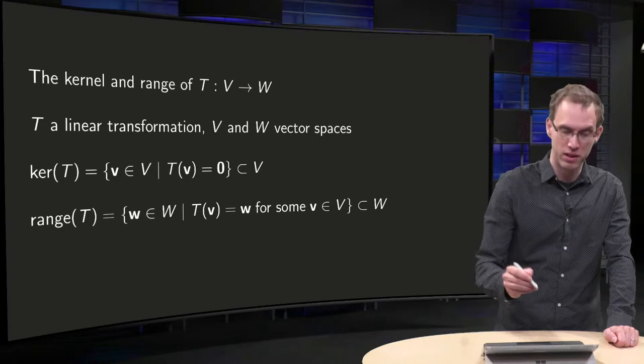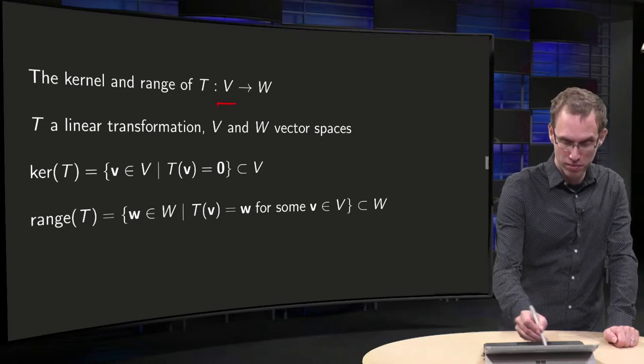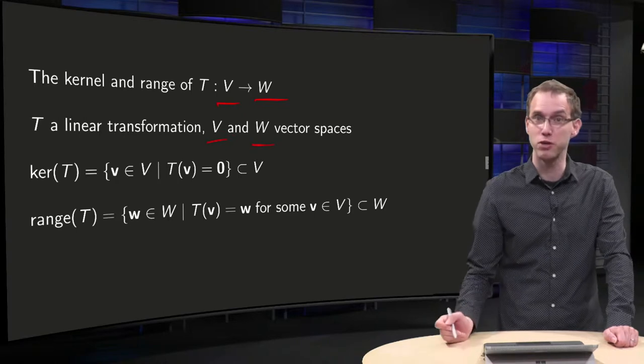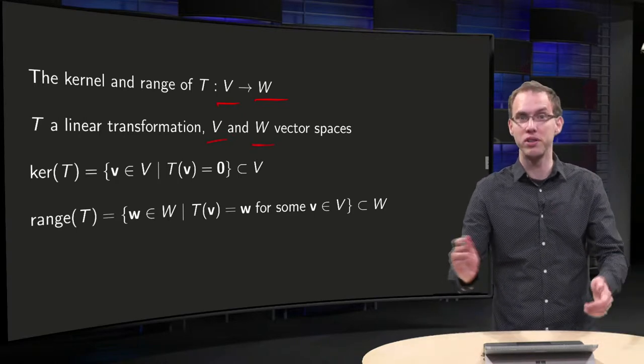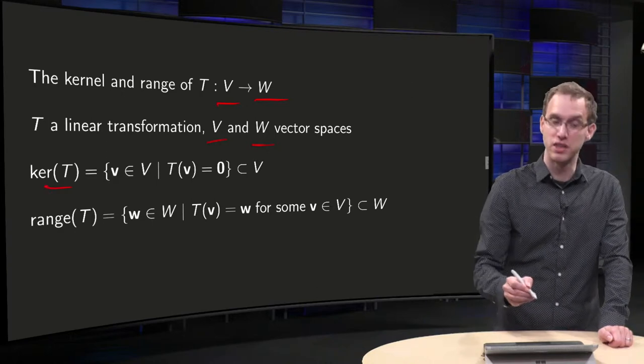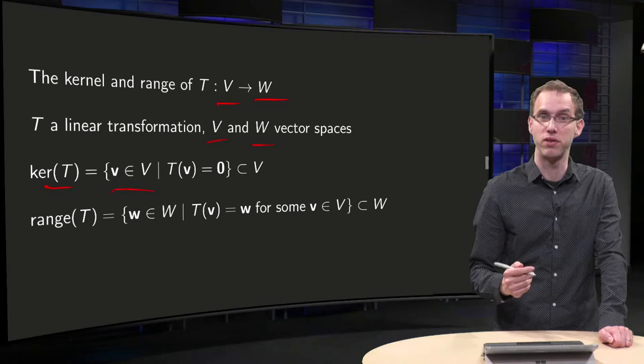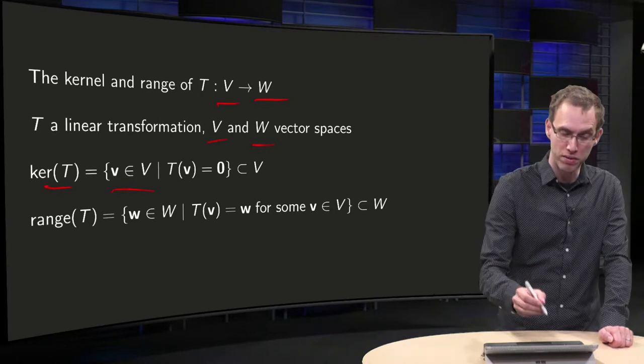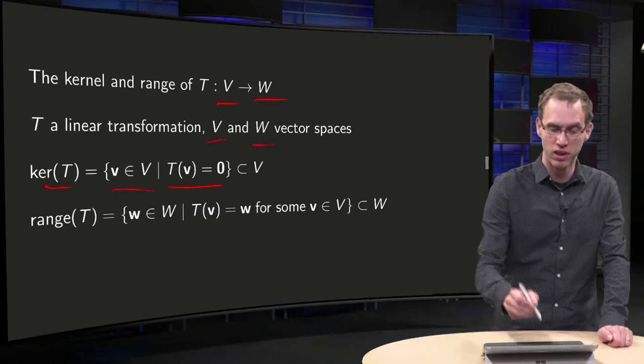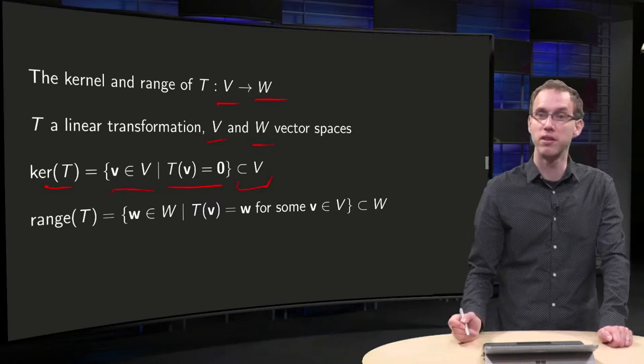So suppose we have a linear transformation T from V to W, T linear and V and W both vector spaces. What are the kernel and the range? We know the definition. The kernel of T is the set of all vectors V in V such that the image T(V) equals the zero vector, which is some subset of the domain V.